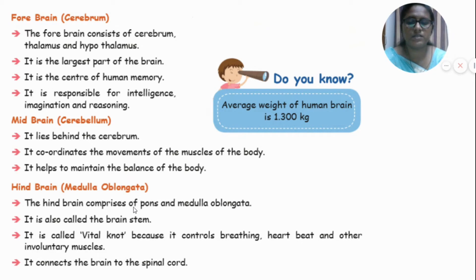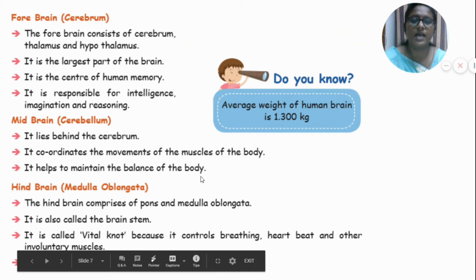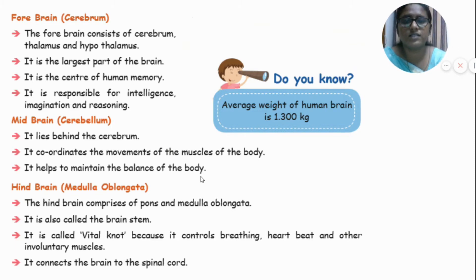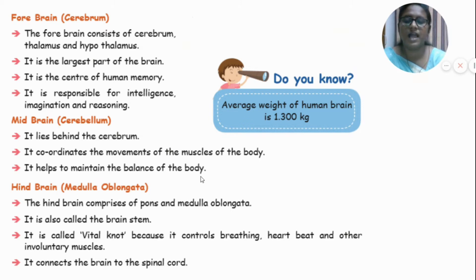The hindbrain comprises the pons and medulla oblongata, and is also called the brain stem. It is called a vital node because it controls breathing, heartbeat, and other involuntary muscles. It connects the brain to the spinal cord. To review: the forebrain is responsible for memory, intelligence, imagination, and reasoning; the midbrain maintains body balance and muscle movement; and the medulla oblongata controls breathing, heartbeat, and involuntary muscles.